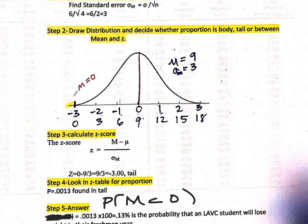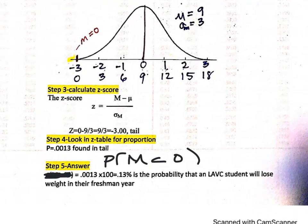The z-score equals the sample mean minus the population mean over the standard error: z equals 0 minus 9, giving negative 9 divided by 3, which equals negative 3. So we're looking for negative 3 in the tail. Looking in the z-table, the proportion in the tail equals 0.0013. The probability that the sample mean is less than zero is 0.0013, or 0.13% — a very small probability that students would lose weight in their freshman year. It's less than 1%.